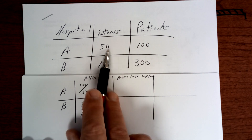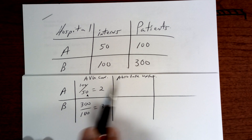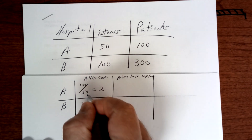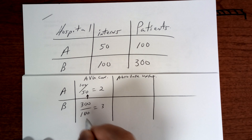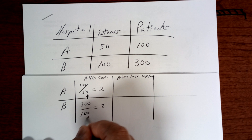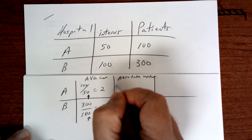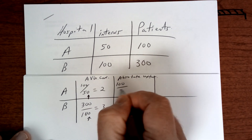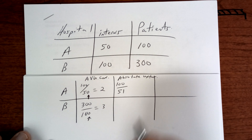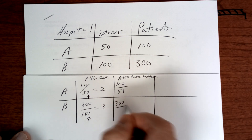When you do that, you get this. To get the absolute unfairness, you add one right here. And when you add one, it's going to be 100 divided by 51, and 300 divided by 101.